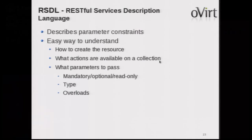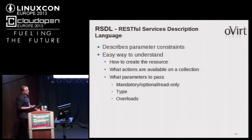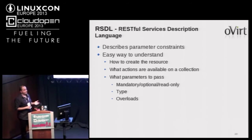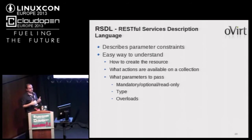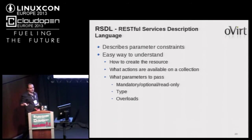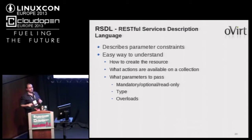To update the VM, use curl with the -d option giving the properties you'd like to change. To delete, issue the DELETE command. A common problem with REST is not knowing what's exposed, what's mandatory when creating a resource, or what you can modify. For that reason we created RSDL — the RESTful Services Description Language — which describes parameter constraints for the REST API.